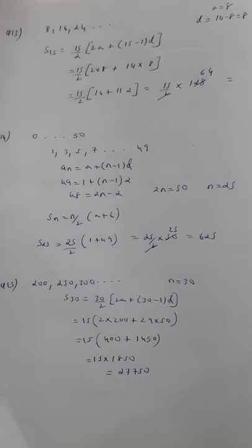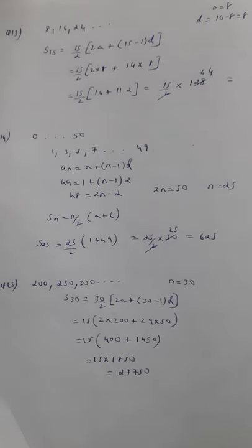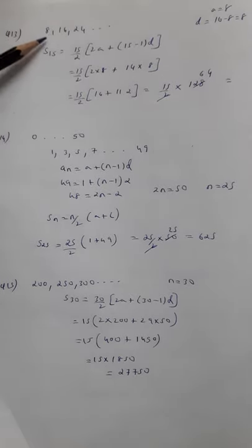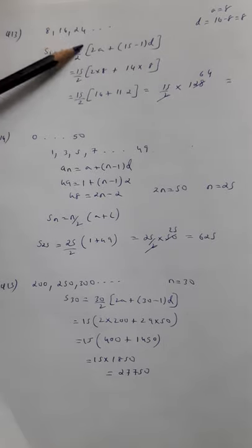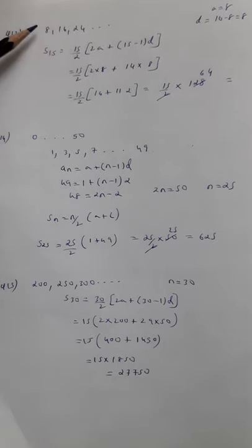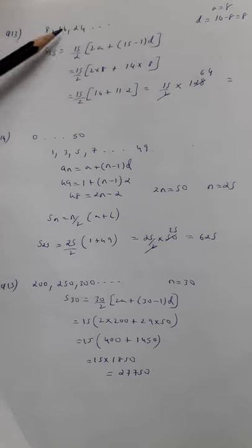In this video I am going to discuss question number 13, 14, and 15. In the 13th question, the arithmetic progression is given: 8, 16, 24. So the first term is 8, common difference will also be 8.